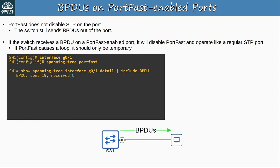Question 3: Which of the following statements is true regarding the default state of errdisable detection and recovery? The answer is A — errdisable detection is enabled for all causes by default, and errdisable recovery is disabled for all causes. That means if any relevant errdisable events occur, the port will be error-disabled, but won't automatically recover unless you enable errdisable recovery for the specific cause.